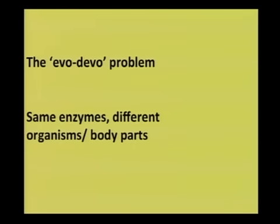The question is: are there principles that can help us understand how various modifications can be readily thrown up that can be tested by natural selection? Or to put it another way, why do cats evolve so fast?